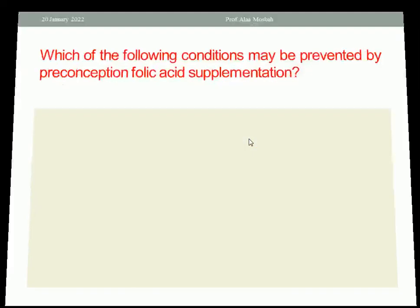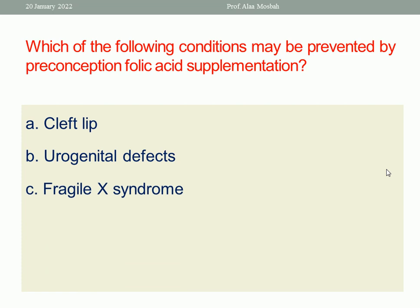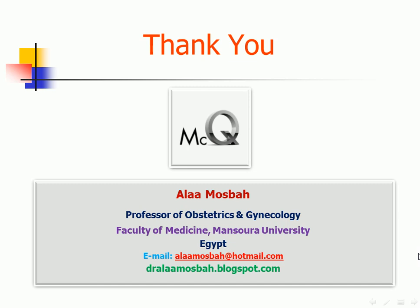Last question: which of the following conditions may be prevented by preconception folic acid supplementation — cleft lip, urogenital defects, fragile X syndrome, or neural tube defects? This is a straightforward question. The guidelines document giving folic acid for prevention of neural tube defects preconception, so the one best response is neural tube defect. Thank you — I'm Dr. Alaa Musbah, professor of obstetrics and gynecology, faculty of Mansour University.